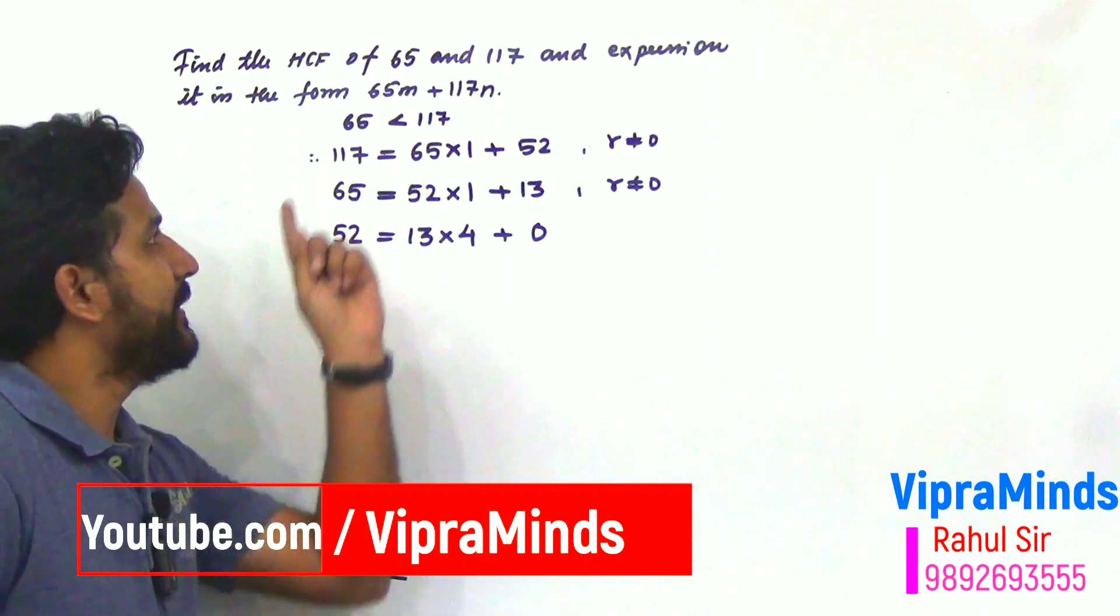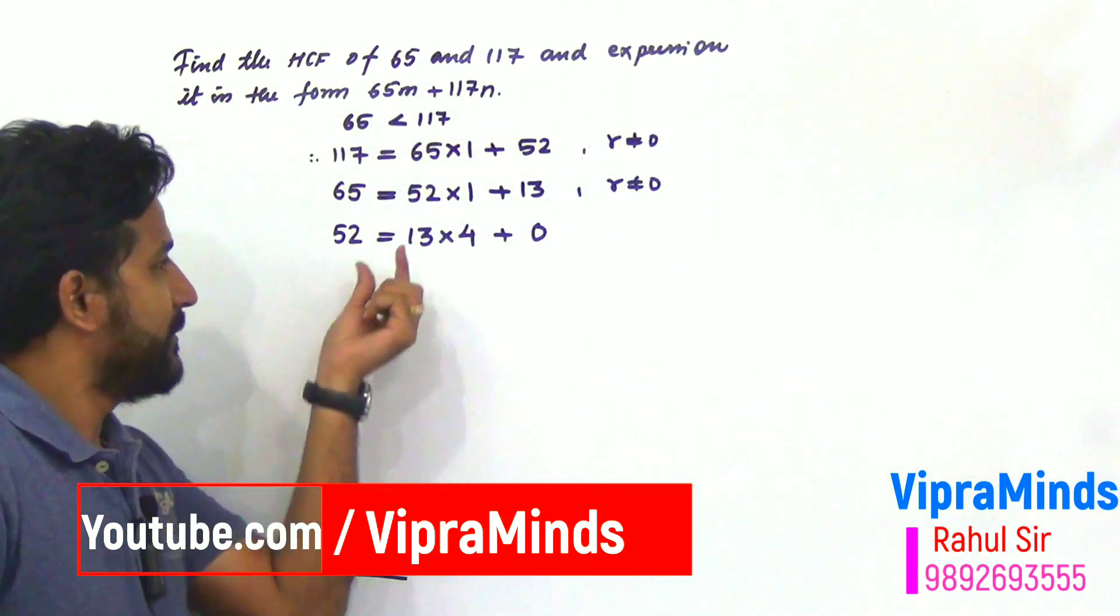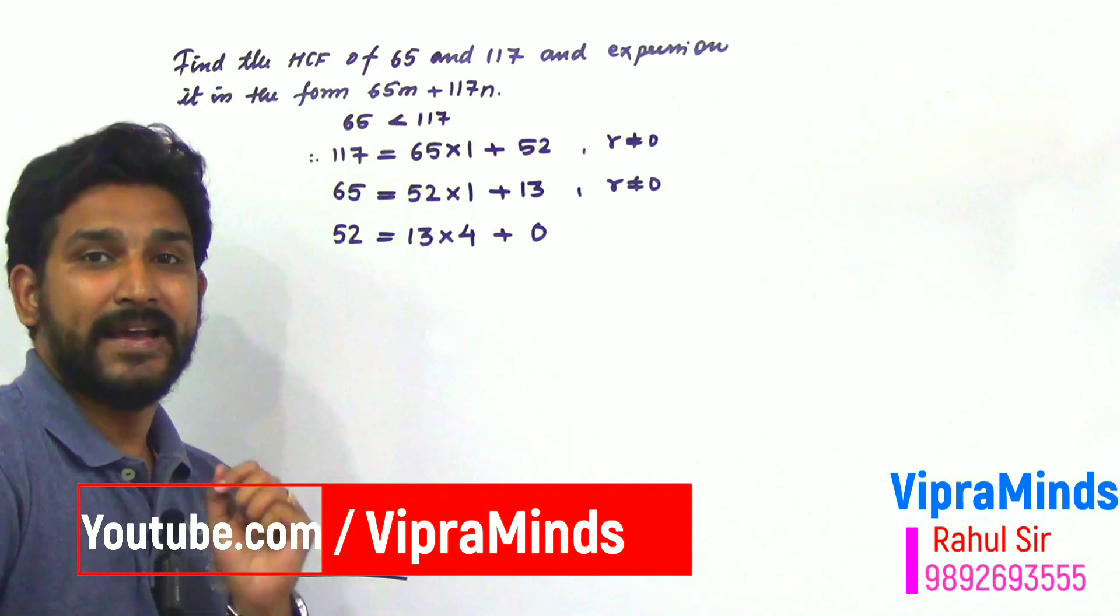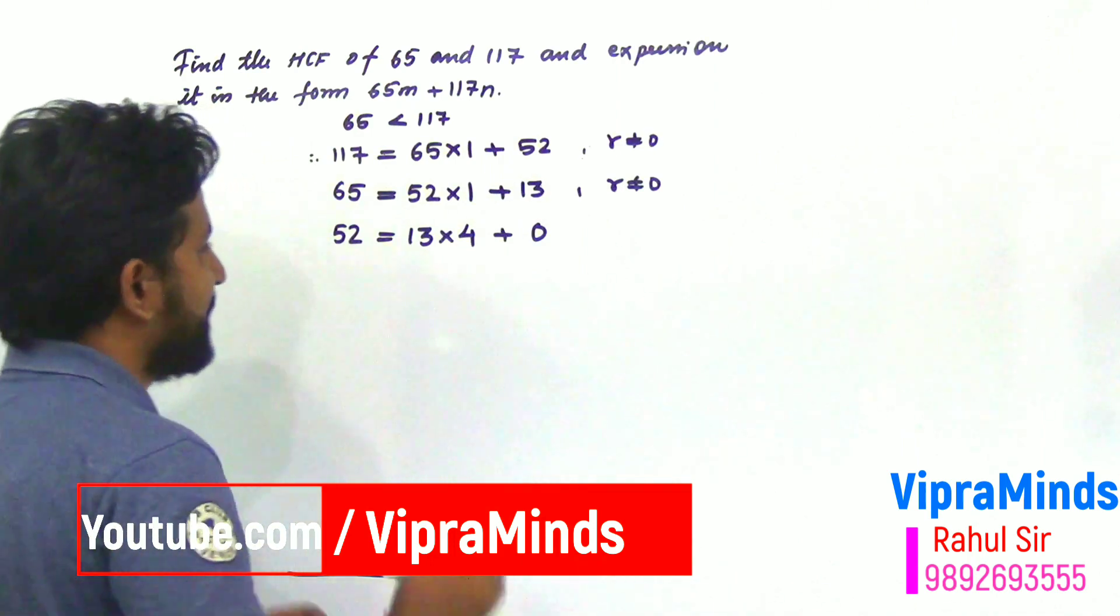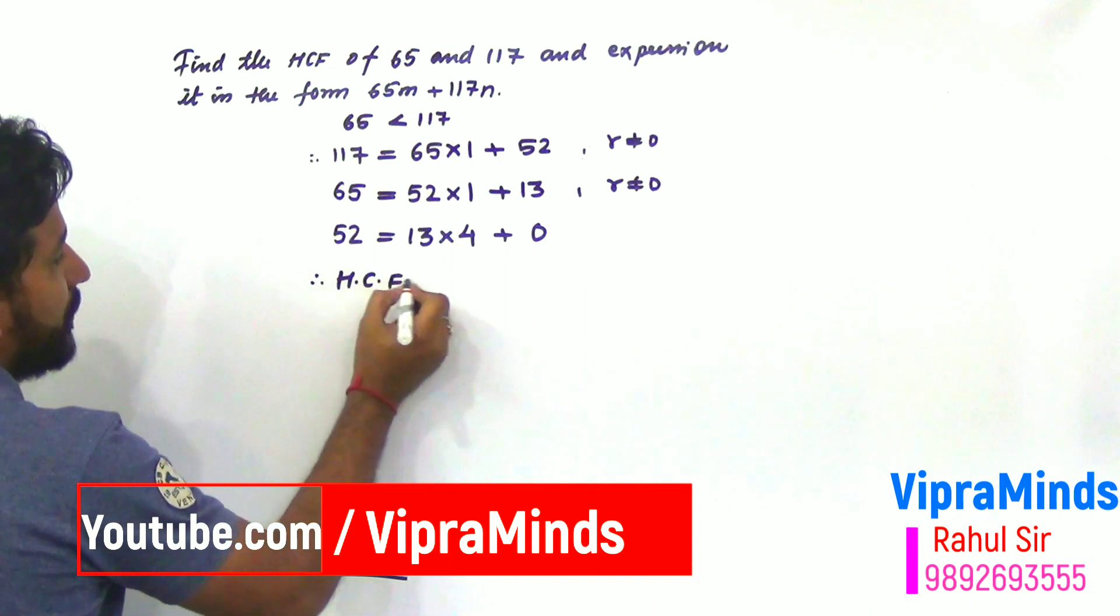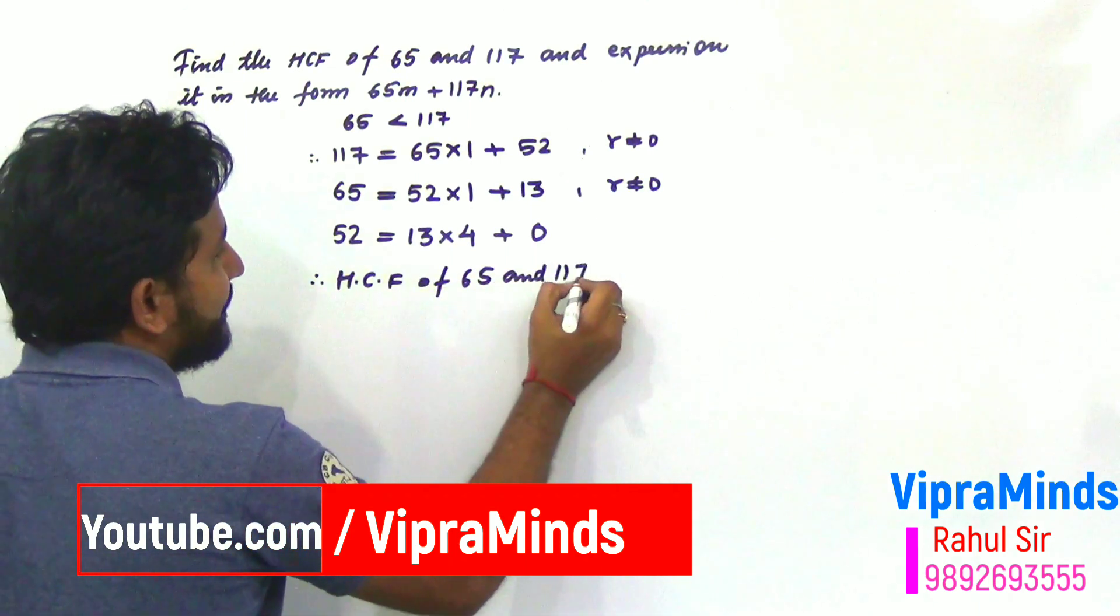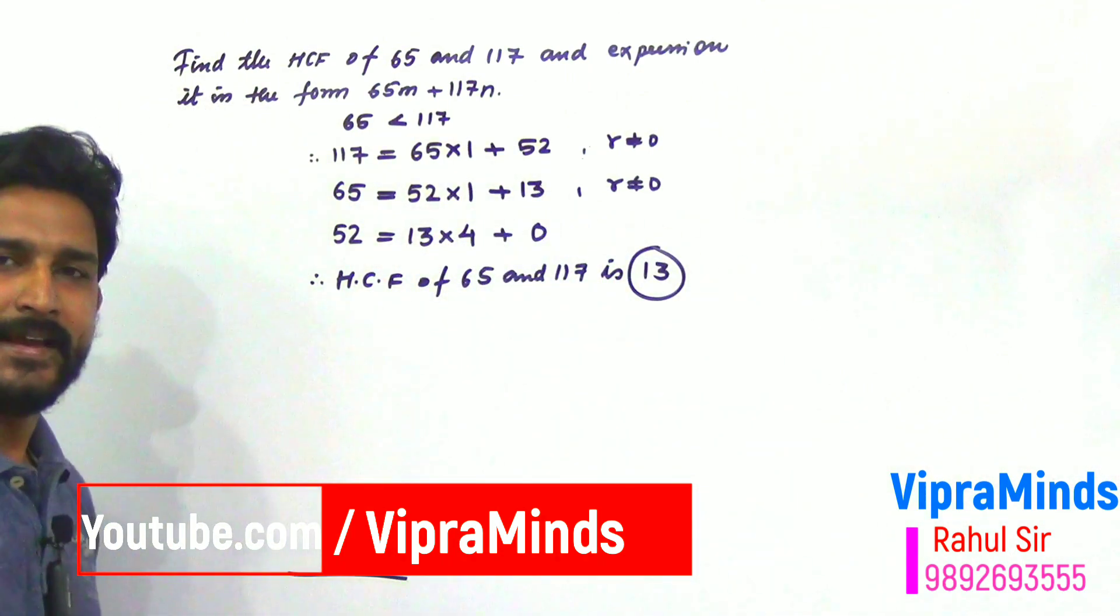So, what will be the HCF of the two numbers? Last step, the divisor is our HCF. Last step, divisor here is 13. That is, HCF of 65 and 117. Therefore HCF of 65 and 117 is 13. Finally we got the HCF.